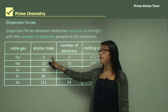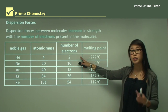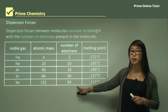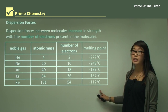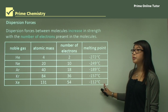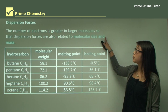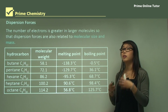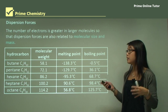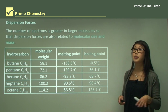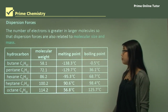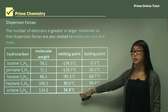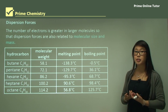Here we have helium with an atomic mass of four and two electrons in one shell, with a melting point of minus 272. As we go down the group, atomic mass increases, the number of electrons increases with more shells, and the melting point increases from minus 272 up to minus 112. We can also look at hydrocarbons, which have more electrons because there are more atoms. As we add carbon to the chain, we increase the molecular weight and the melting point goes from negative to positive. This is due to dispersion forces involving the electrons.